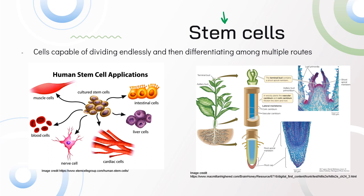Stem cells are cells that are capable of dividing endlessly and are able to differentiate along multiple routes. They are not yet differentiated but are capable of differentiating into multiple kinds of cells. These cultured stem cells could become muscle cells, blood cells, nerve cells, cardiac cells, liver cells, or intestine cells. Stem cells start out as undifferentiated but are capable of going through differentiation.